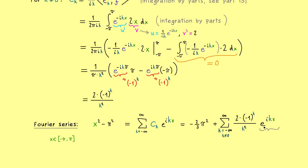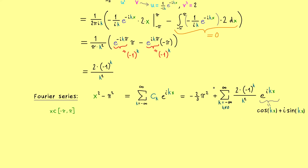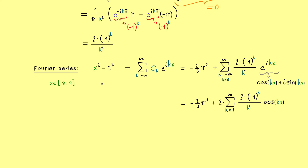Euler's formula means the exponential function can be written as cosine plus i sine. This is important because the left-hand side is a real number, so the right-hand side must also be real. We can take the real part on the right-hand side without changing anything, which means only the cosine function remains. Moreover, cosine is an even function, so it doesn't matter if we put in minus k or plus k — we can take one part of the infinite sum times 2, giving a sum from k = 1 to infinity.